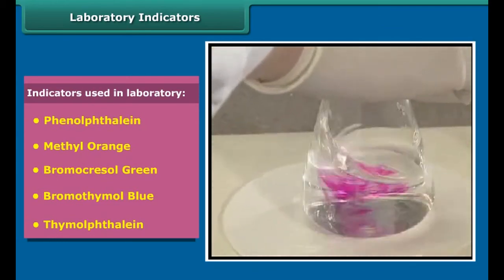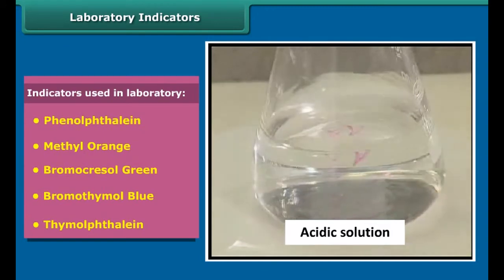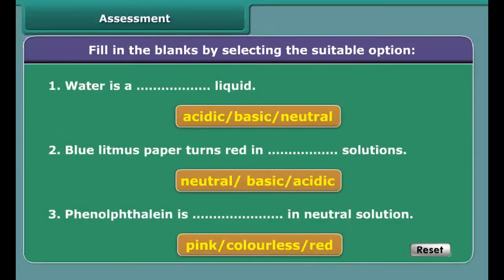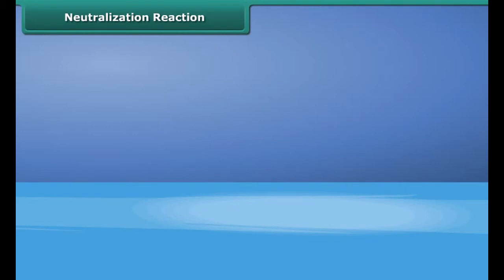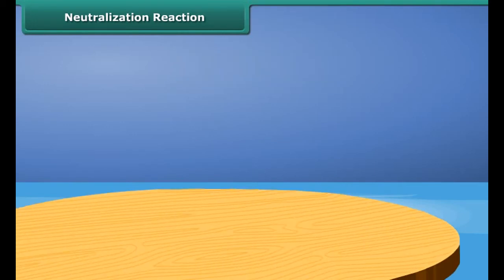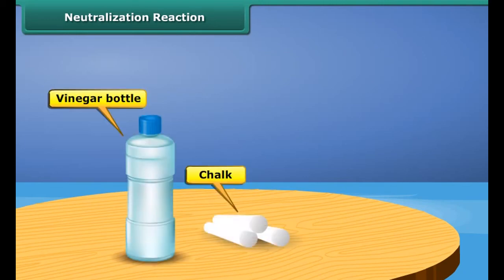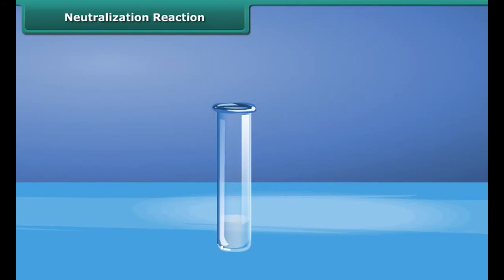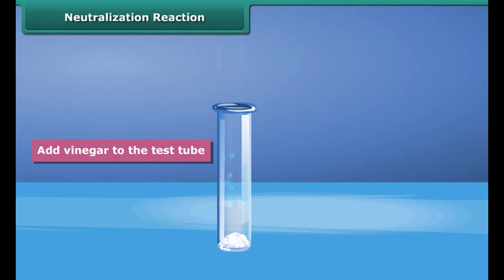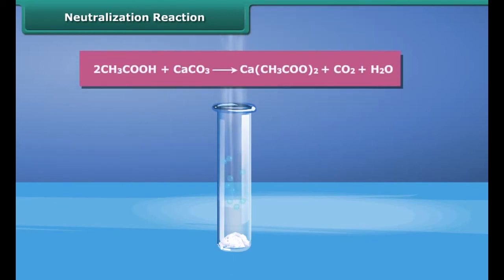Take some hydrochloric acid in a beaker, then add some phenolphthalein to it. Now add sodium hydroxide dropwise with continuous stirring. After some time, a pink color slowly appears in the solution. When more sodium hydroxide is added, the pink color becomes brighter. On adding a drop of hydrochloric acid, the solution becomes colorless again. So phenolphthalein appears pink in alkaline solution, colorless in acidic solution, and colorless in neutral medium.